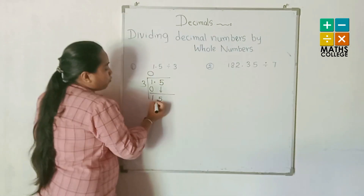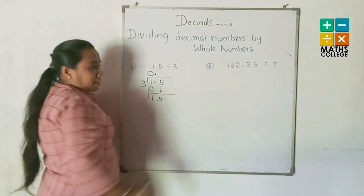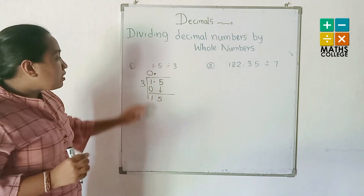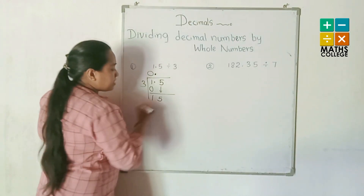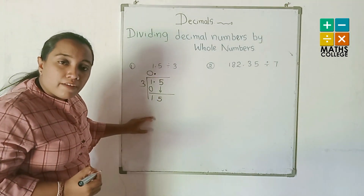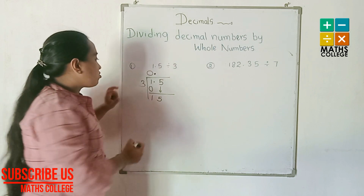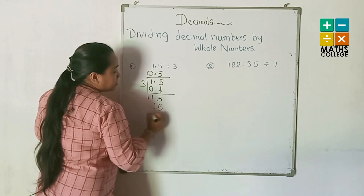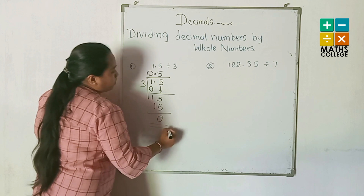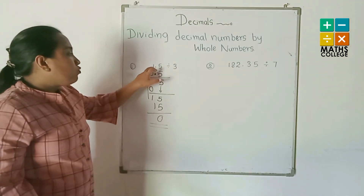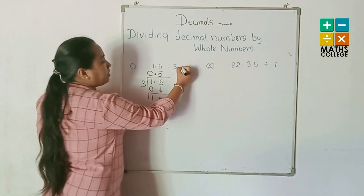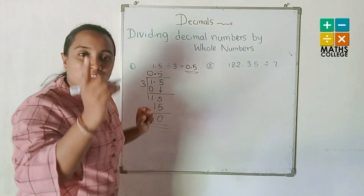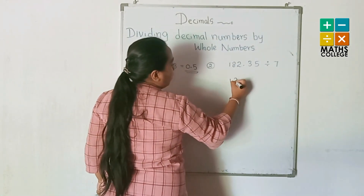The 5 is after the decimal point, so put the decimal point in the answer here. Now consider 15: how many 3s in 15? Five 3s. Put 5 in the answer. 5 multiplied by 3 is 15; subtraction gives 0. So 1.5 divided by 3 equals 0.5.